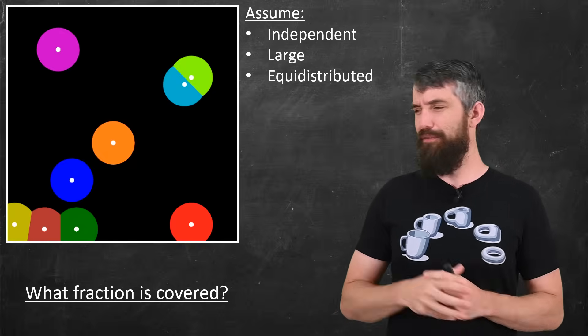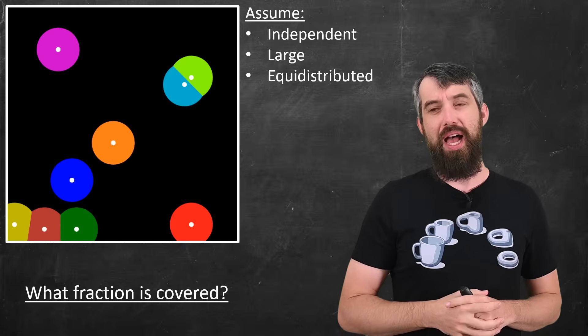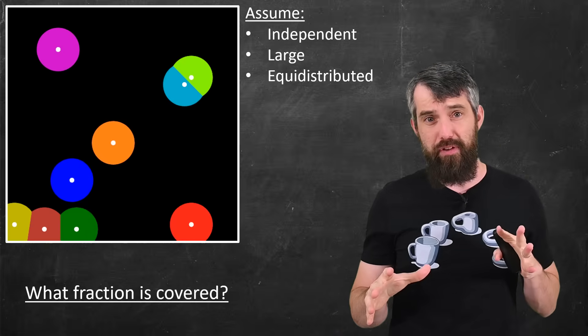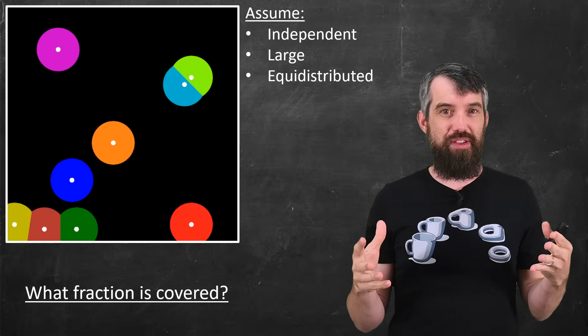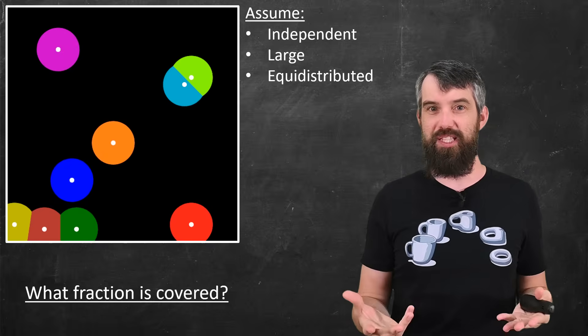I have to have a few assumptions. In the diagram I've shown you, just for the sake of the animation, I only have a few points. I'm going to assume I have a very large number of points. I'm going to assume that they're sort of independent of each other. They're like random seed places within the space.